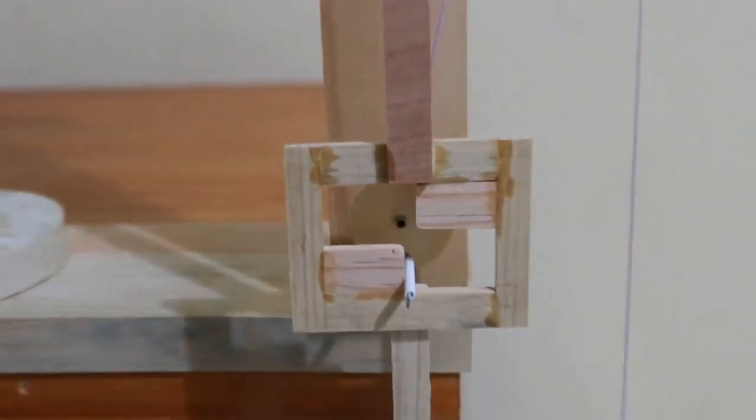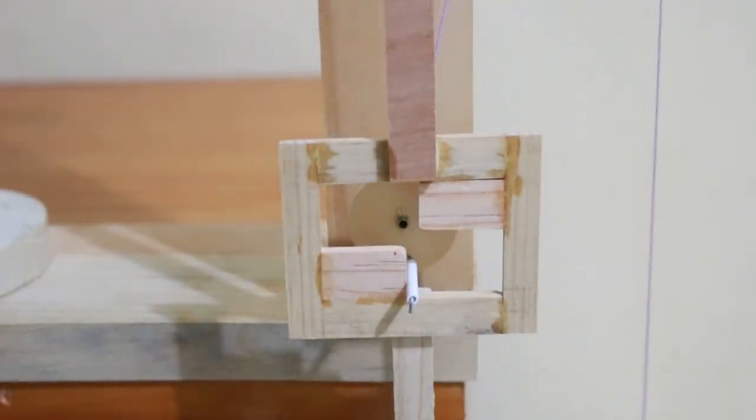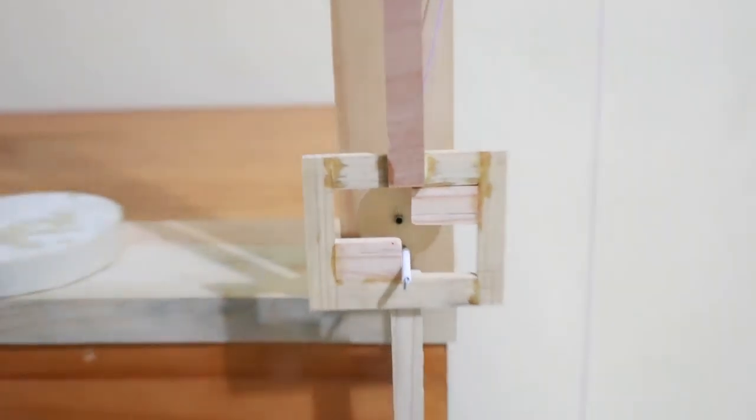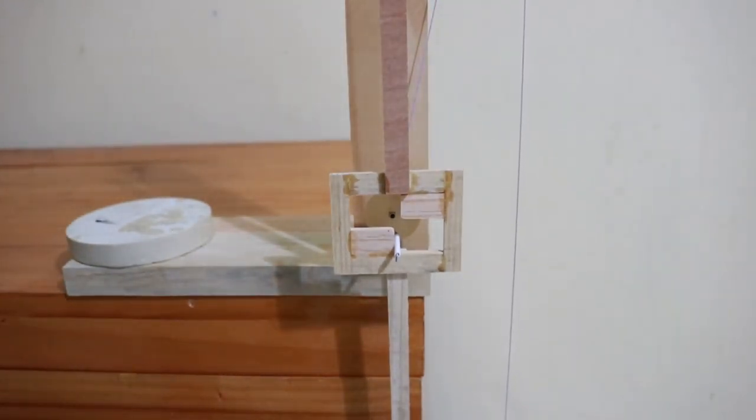This particular type is known as the McDowell escapement. It's one of the simplest, but also inefficient. It has a lot of friction, which makes it imprecise. However, it illustrates very well the concept of the escapement and pendulum as a time regulator mechanism.